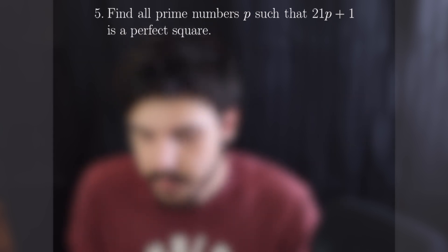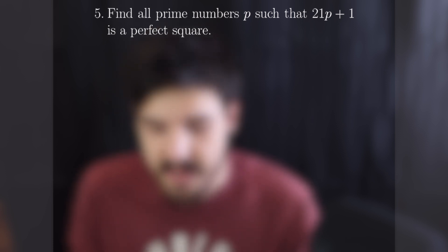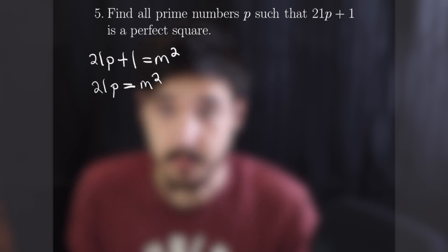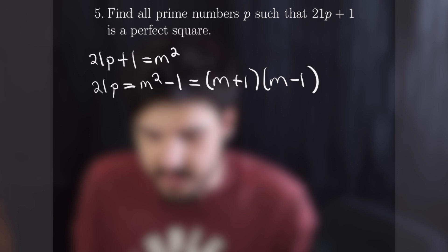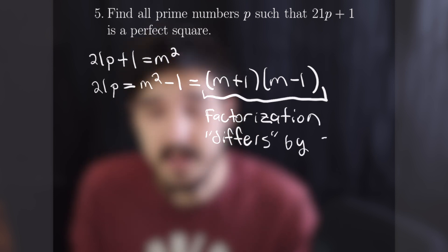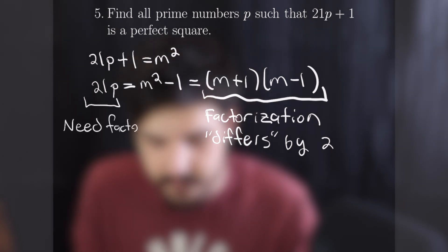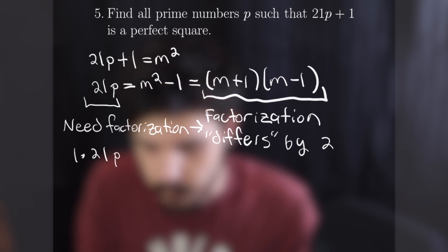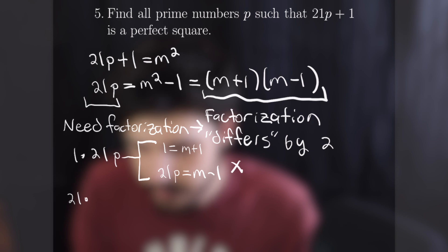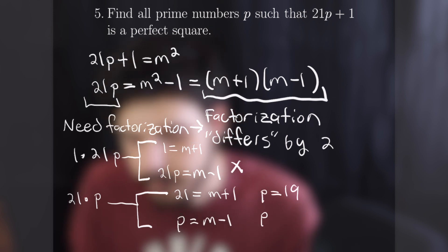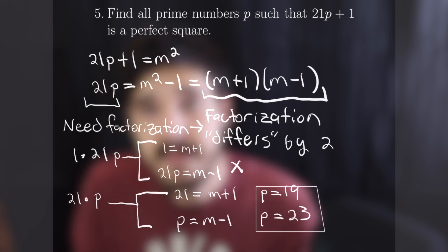For number 5, we want to find all prime numbers p such that 21p+1 is a perfect square. Writing 21p+1 equals m^2, we rearrange to 21p equals m^2 - 1 equals (m+1)(m-1). We need a factorization of 21p that produces factors differing by 2. Trying 1 times 21p gives m+1 equals 1 and m-1 equals 21p — no prime works. Trying 21 times p gives m+1 equals 21 and m-1 equals p; primes differing from 21 by 2 are 19 and 23, giving two solutions.